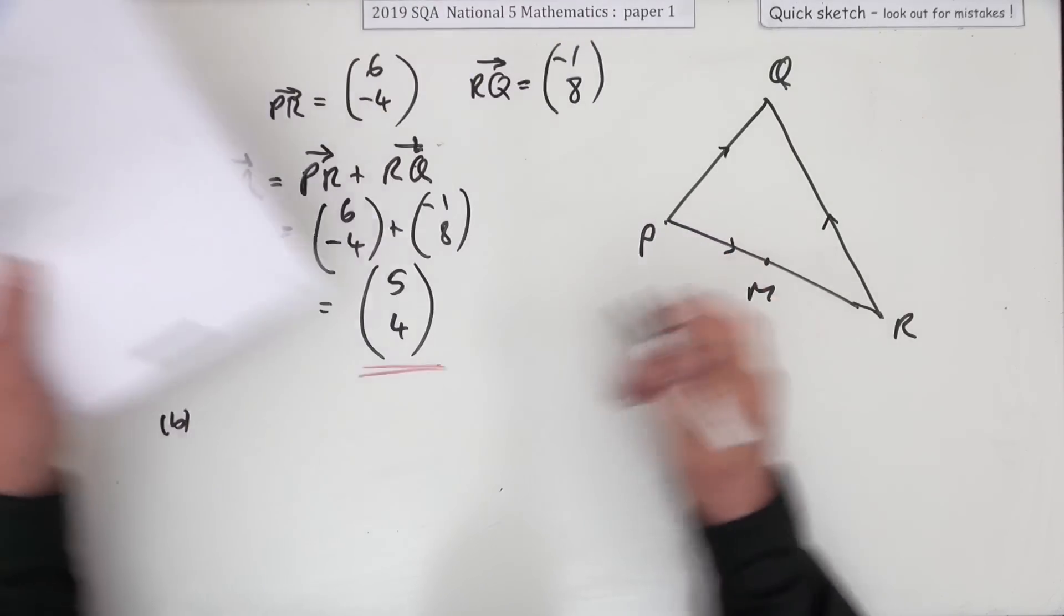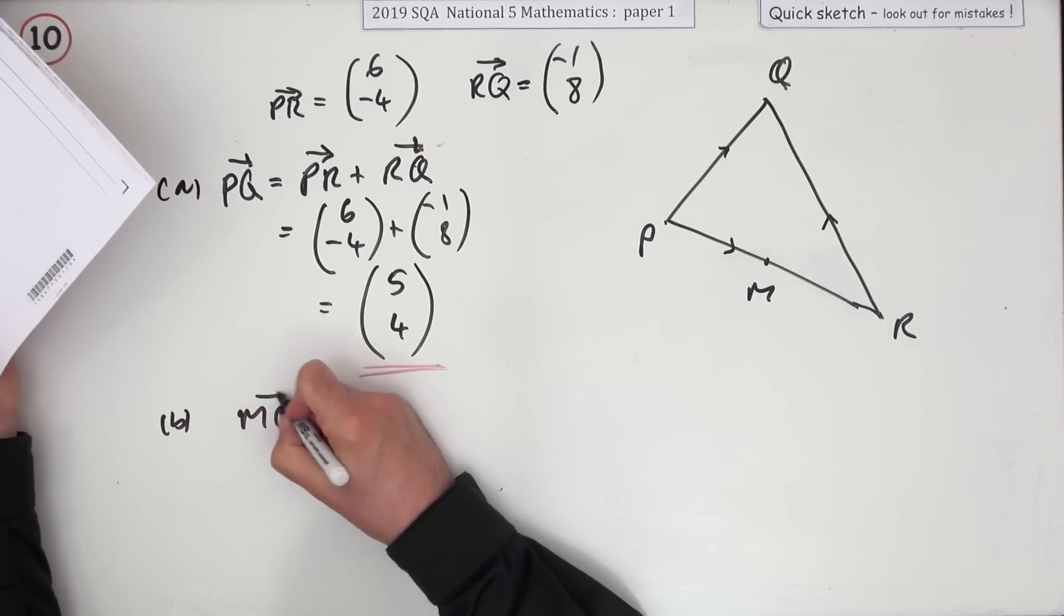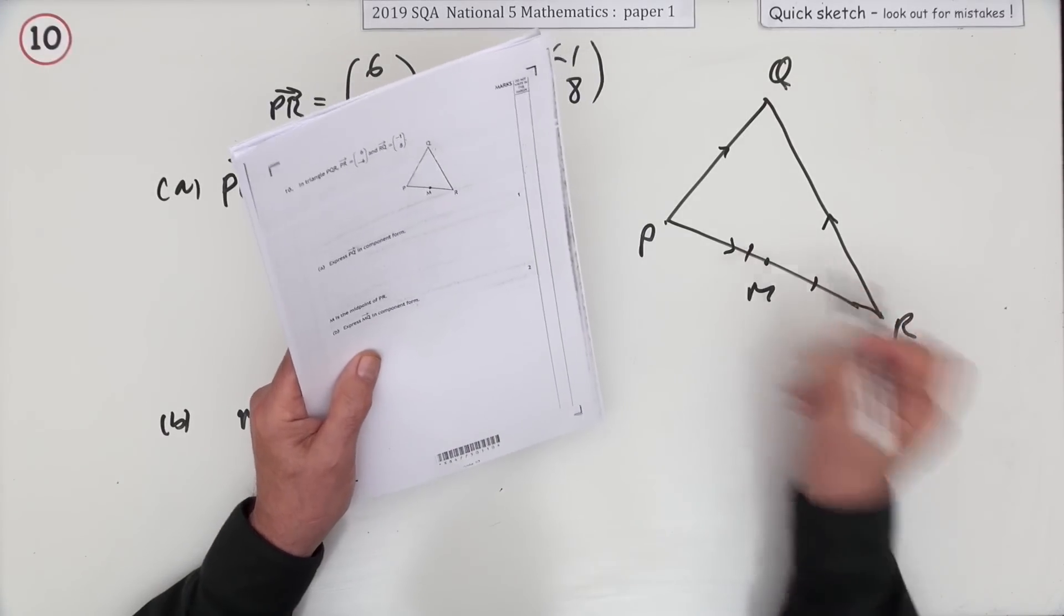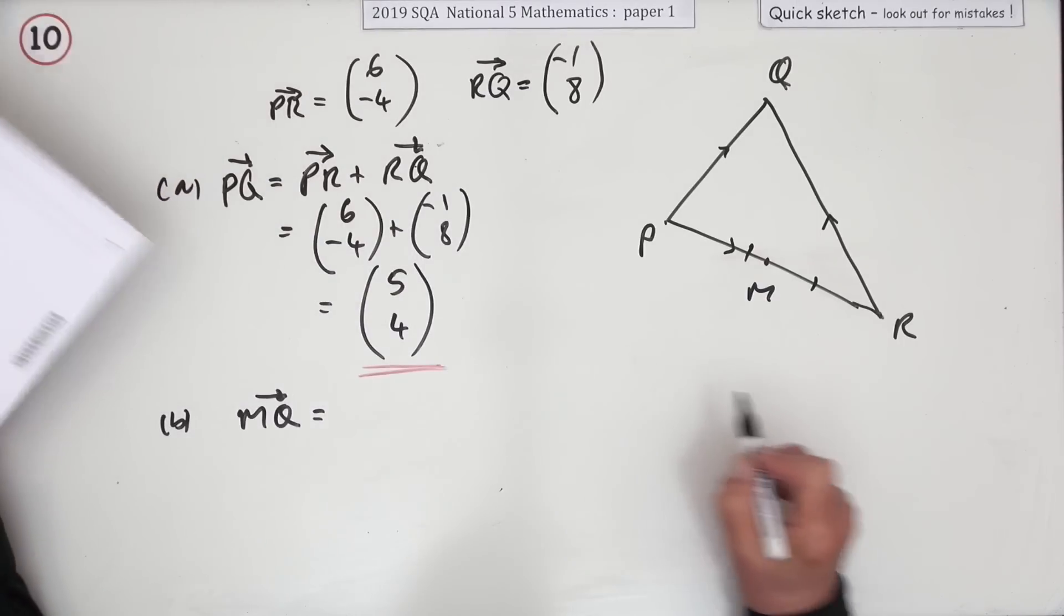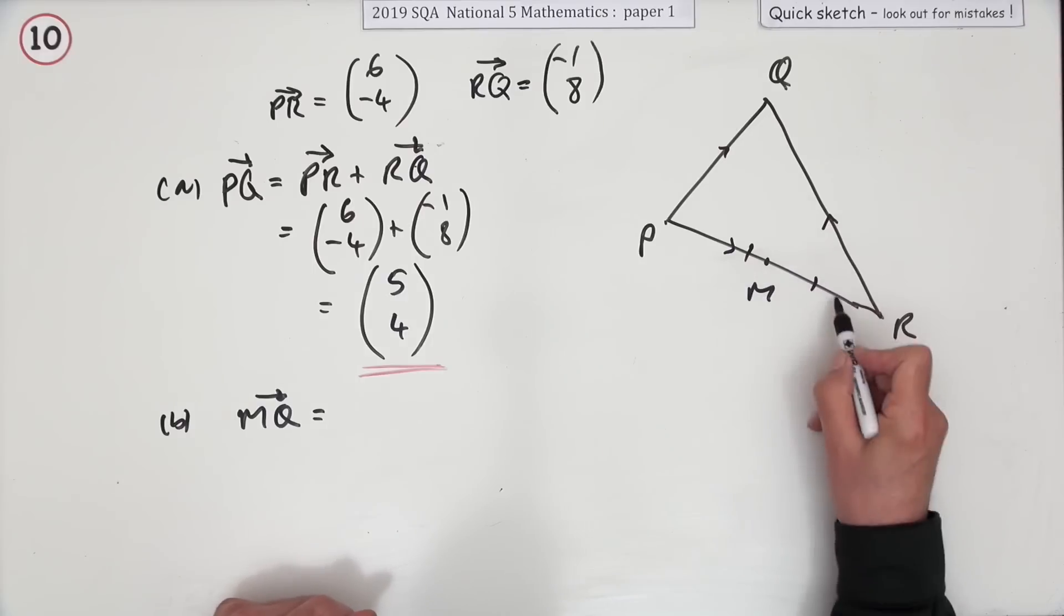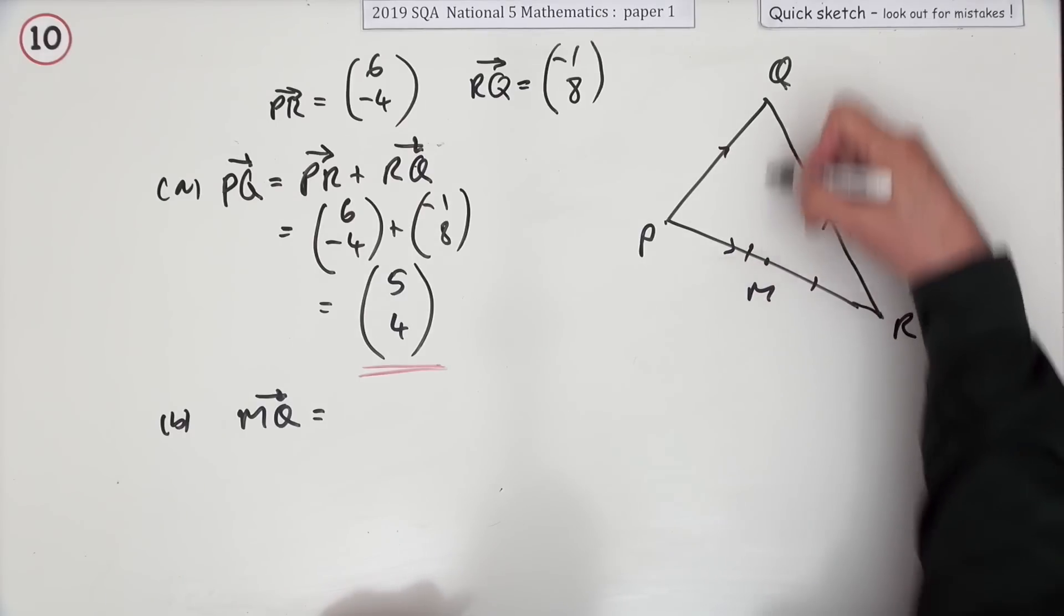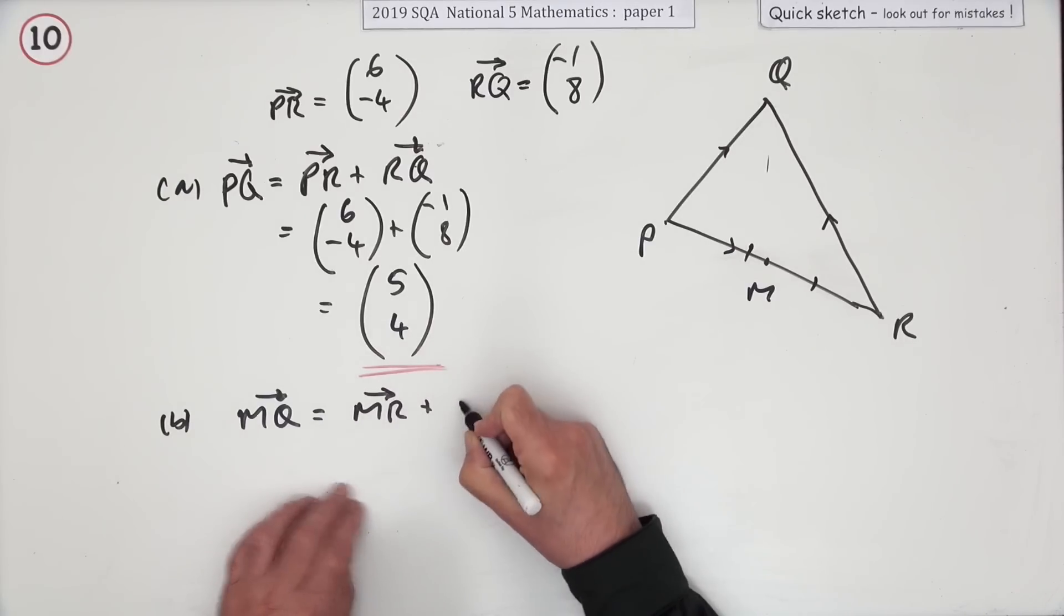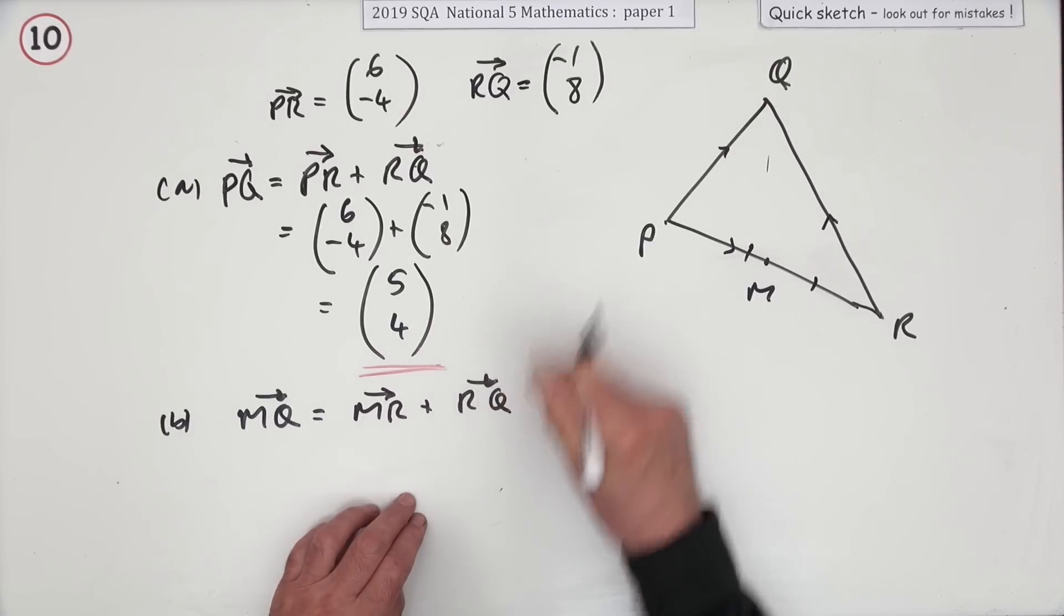Now part B, express MQ. There's M and it says M is the midpoint in component form. Well, just follow the same path. How can you get from M to Q? What's MQ? So I'll go from M to R and then I'll go from R to Q.